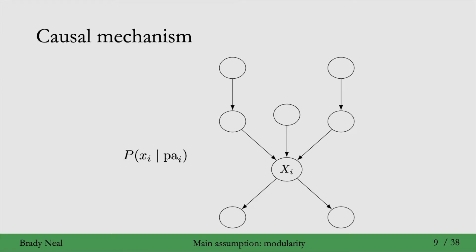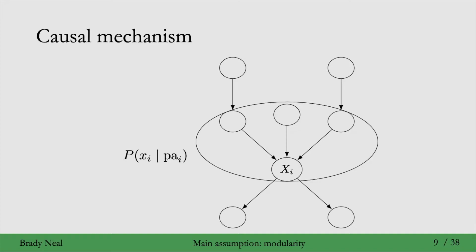And graphically, this looks like this. You can think of the causal mechanism for a specific variable in a causal graph as all of the parents of that variable and their arrows into that variable. That's the mechanism that generates that variable.